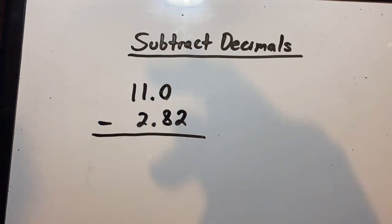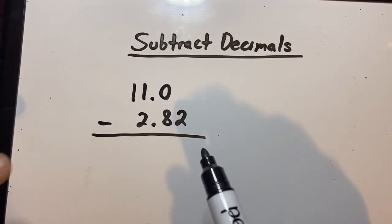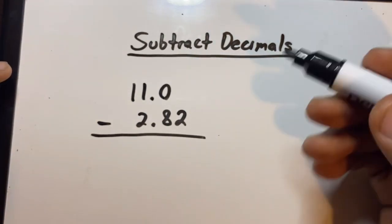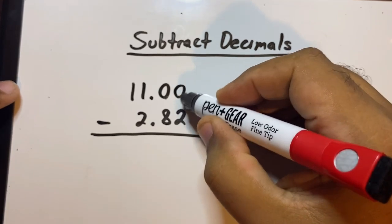You will get questions like these in the future, but let me go over with you before that. So 11.0 minus 2.82. Well, like we always do, there's a digit down here, so let's add a 0 on top.